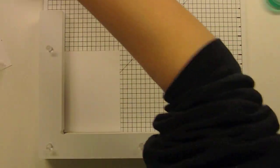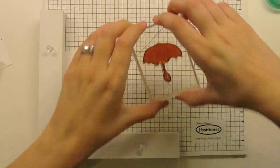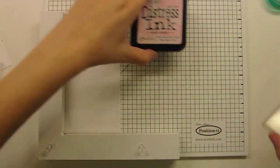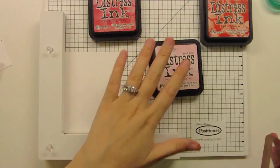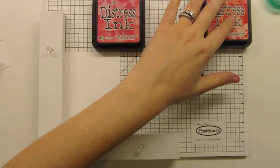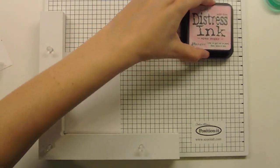That's Partly Cloudy by Lawn Fawn that you just saw. And I'm using a large umbrella, picking it up with my acrylic block. And I'm going to be using three colors of Distress Ink today: Spun Sugar, Worn Lipstick, and then Barn Door. But we're going to start with the Spun Sugar.